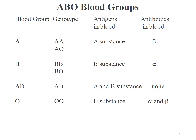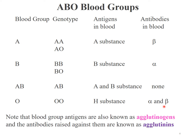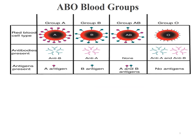We can add one more column to the table. For blood group A, you have antibody against blood group B. For blood group B, you have antibody against blood group A. For blood group AB, you will not have any antibody. But for blood group O, you have antibodies towards blood group A and B. Please take note that blood group antigens are also known as agglutinogens, while the antibodies raised against these antigens are known as agglutinins.